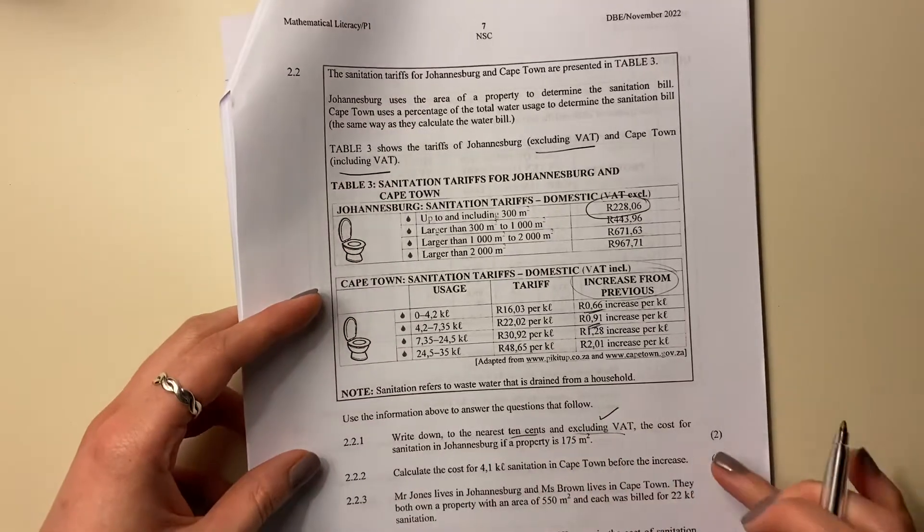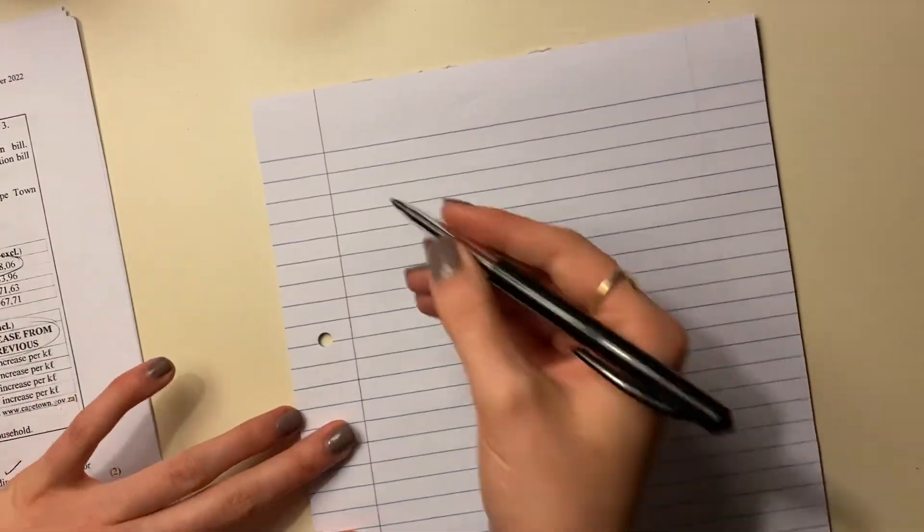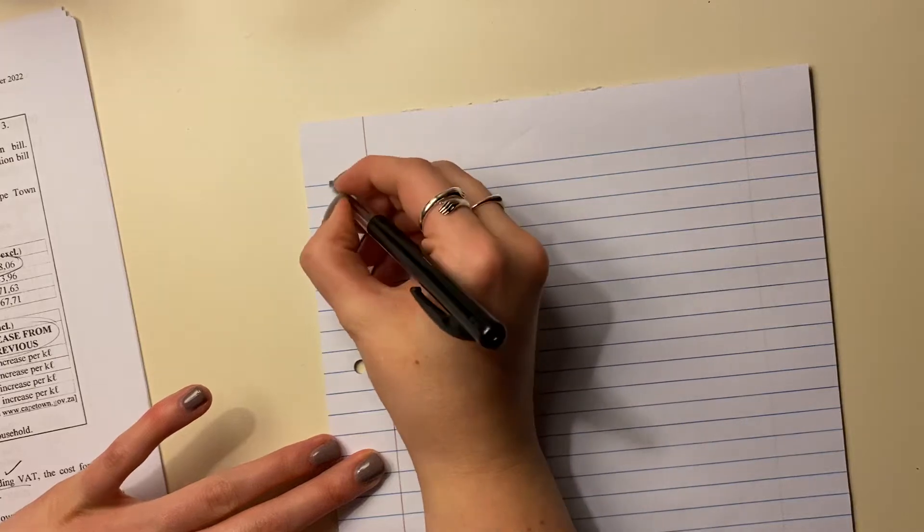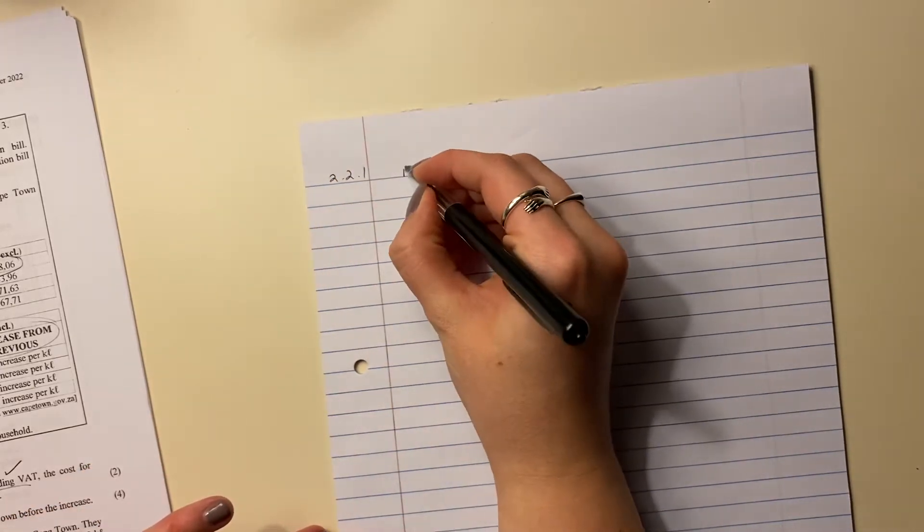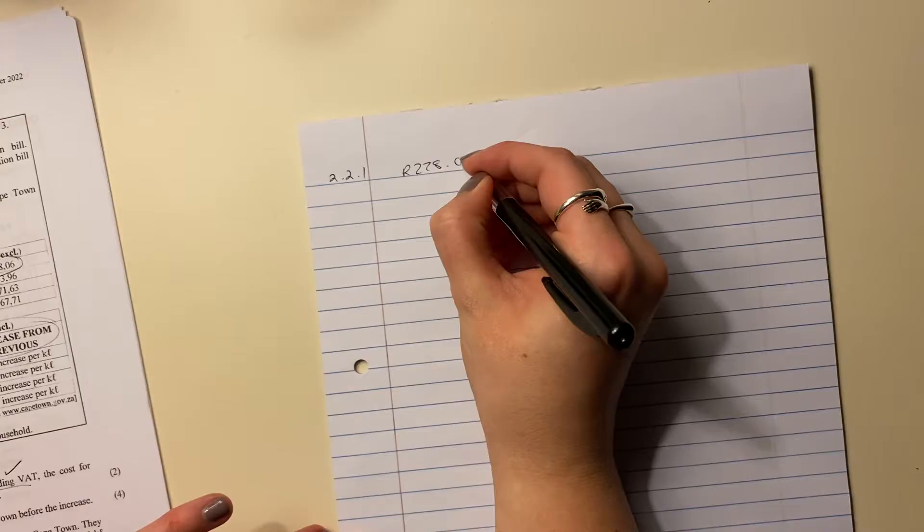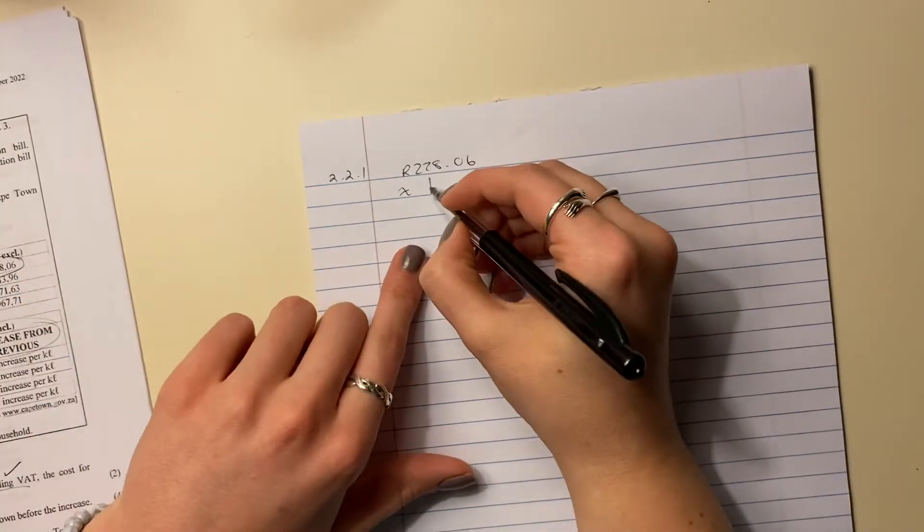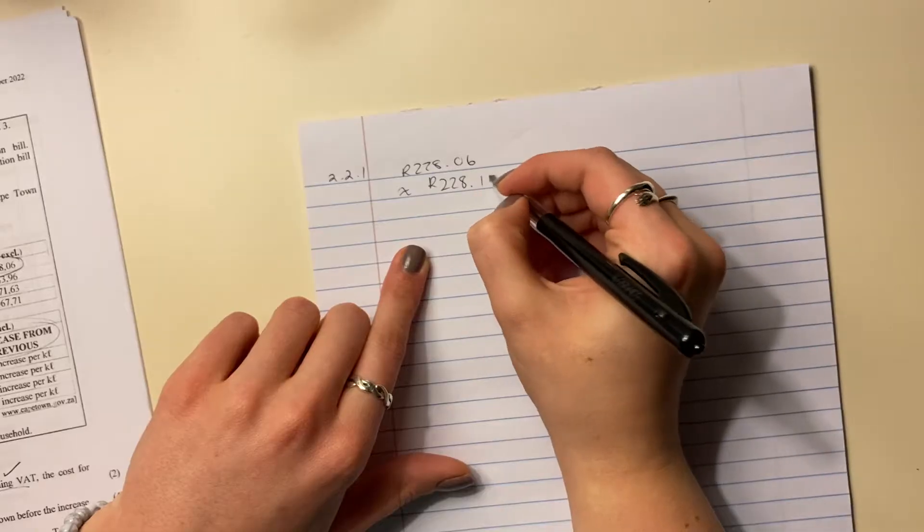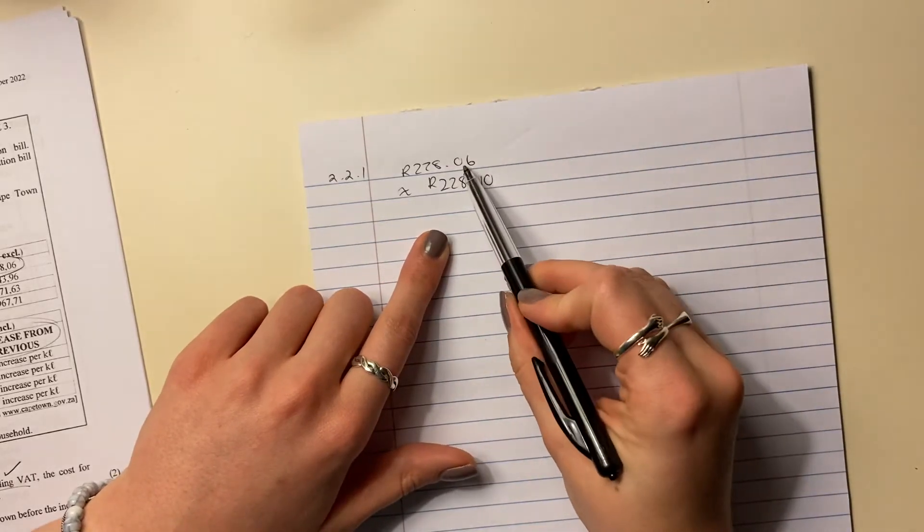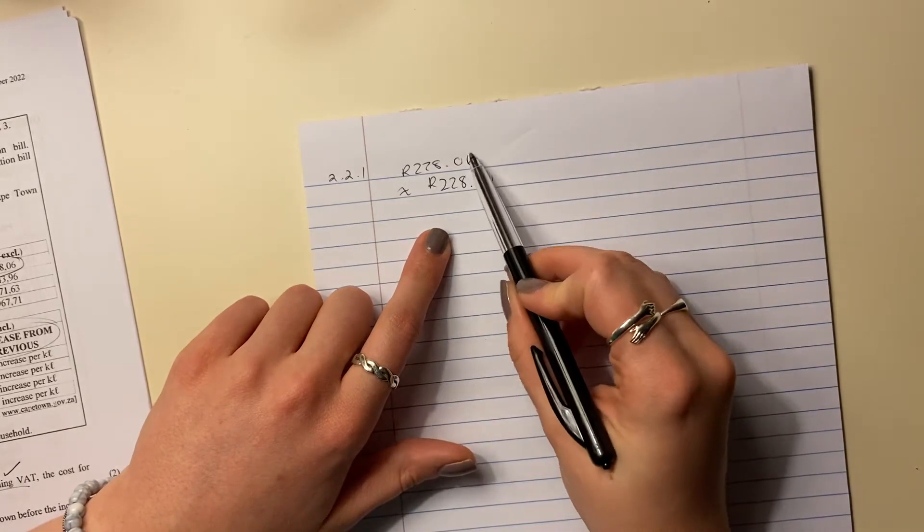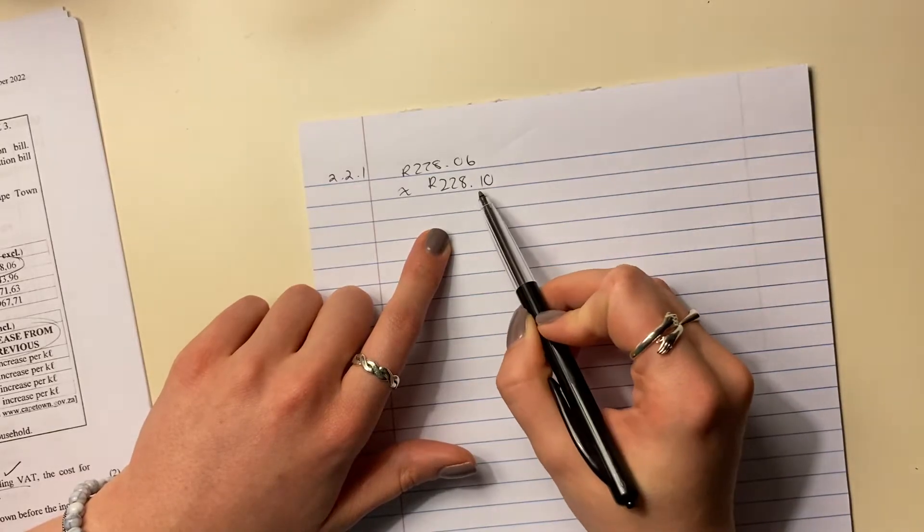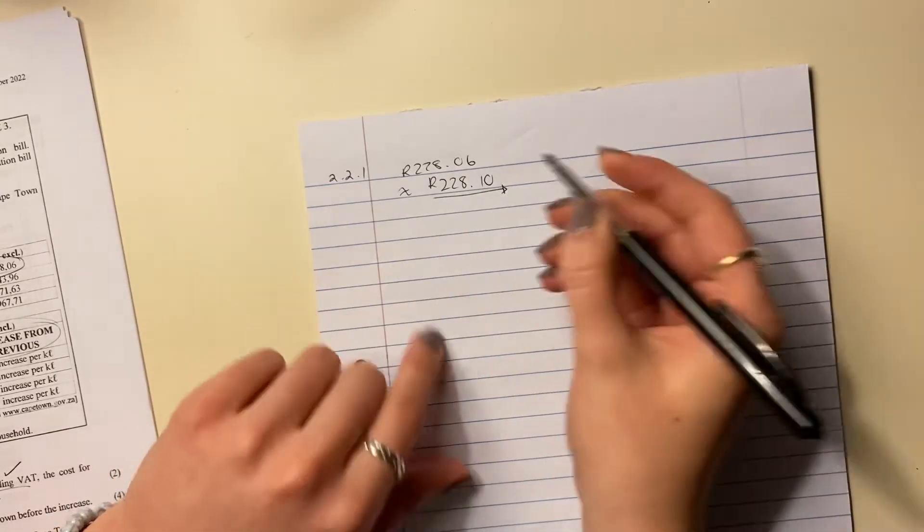Please be careful to always label it correctly. So the answer is 228.06, but we want to round it off. It should be 228.10. The reason being is the 06 - 6 is greater than 5, so we have to round it up to 10. And then that is your answer there.